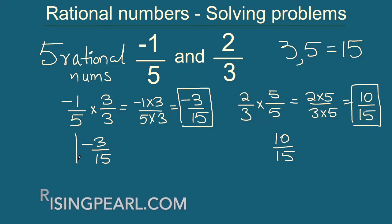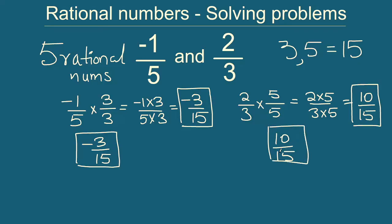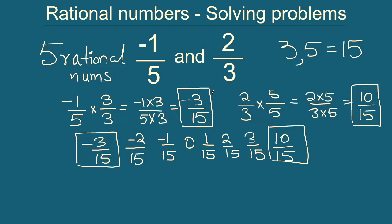Now we can easily write a lot of rational numbers between these two because the denominator is the same. Keeping the denominator as 15 and starting from minus 3, the next one will be minus 2 over 15, then minus 1 over 15, then 0 over 15 (which is simply 0), then 1 over 15, then 2 over 15, then 3 over 15, and so on. So did we get our five numbers? Of course — we have 1, 2, 3, 4, 5, 6 rational numbers. This is one way to solve such problems.